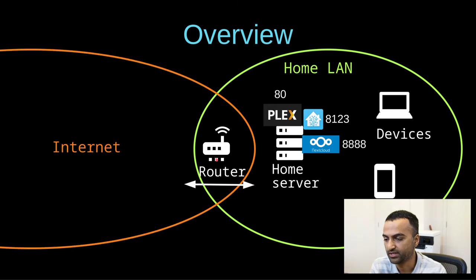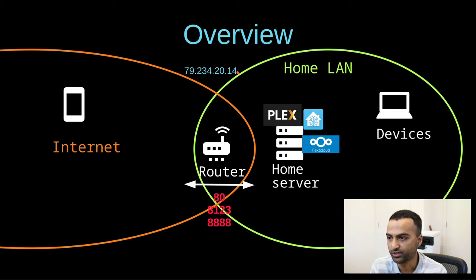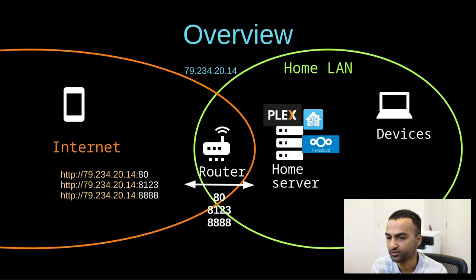Your home network is connected to the internet using a router, but what if one of your devices was not on your home network and you wanted to access all your home services over the internet? One way is to simply use your external IP address and then open up some ports on your router, also known as port forwarding. This would forward the ports to each of these services on your server and you would access them over the internet using the IP address.